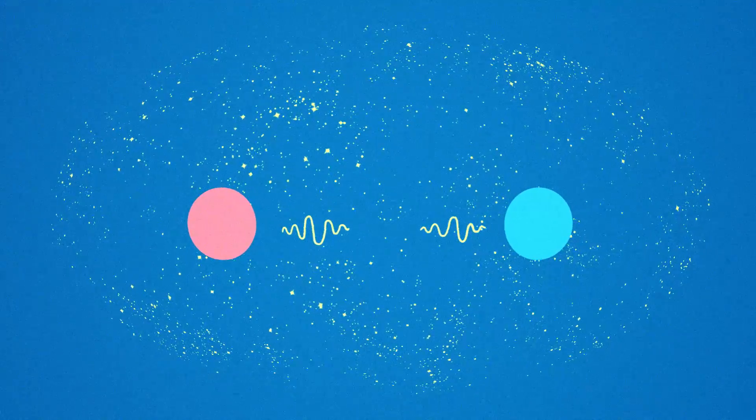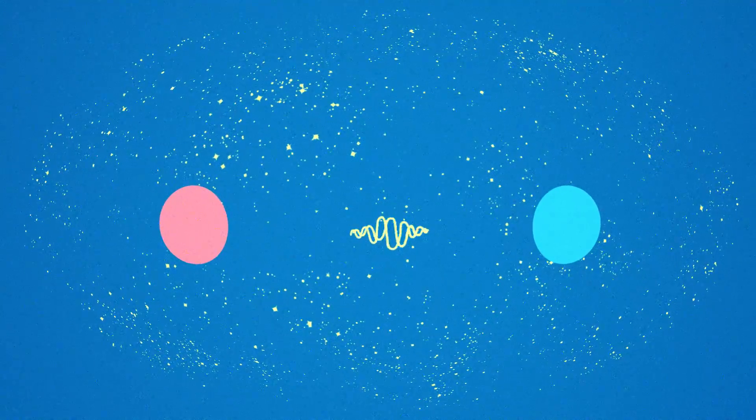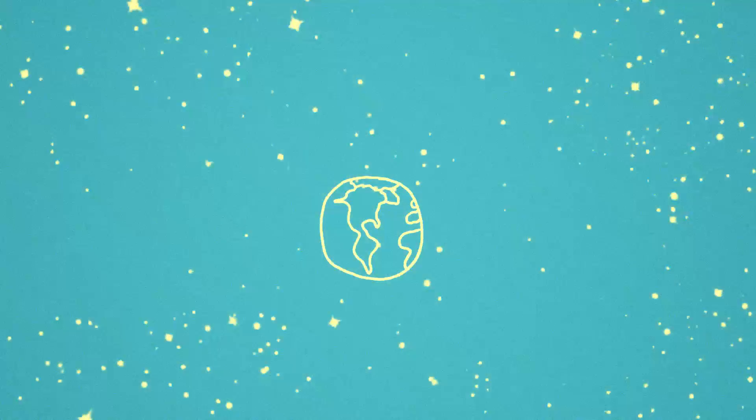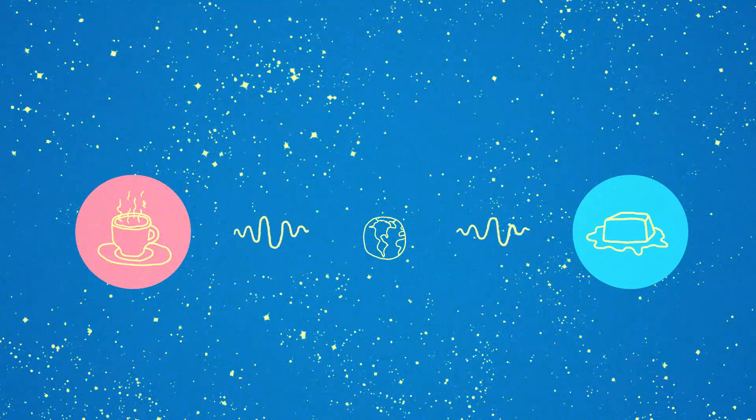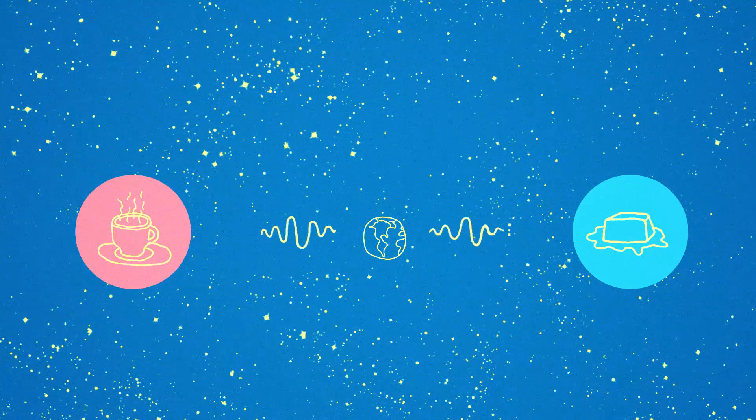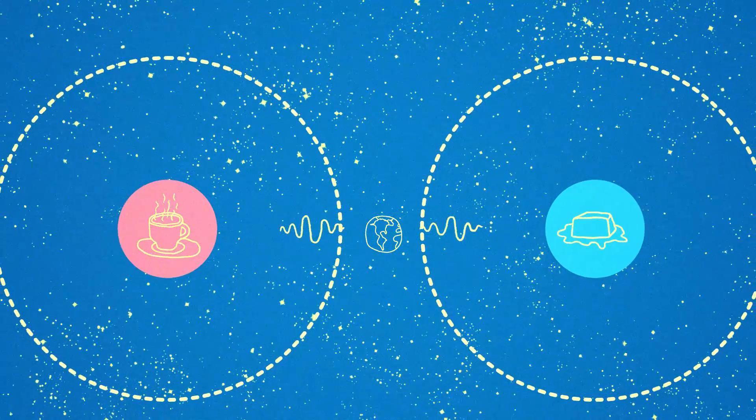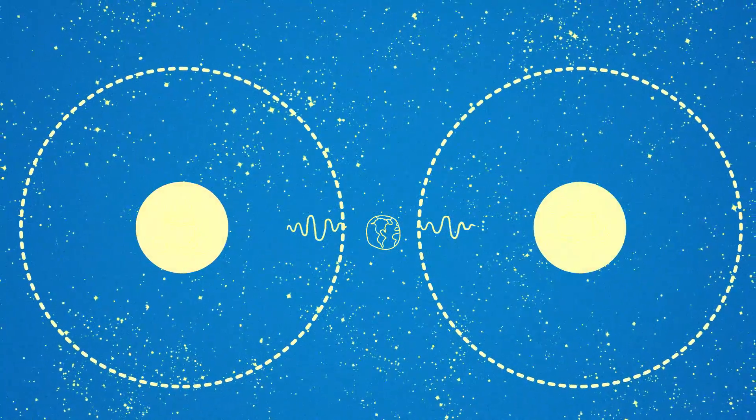But if space has been expanding for all the billions of years since the Big Bang, photons from one end of the universe have never been able to make it to the other end. Which means if you look east, you should see a different temperature than if you look west. Those parts should never have been able to balance out. They're beyond each other's horizons. And yet, they have the same temperature.